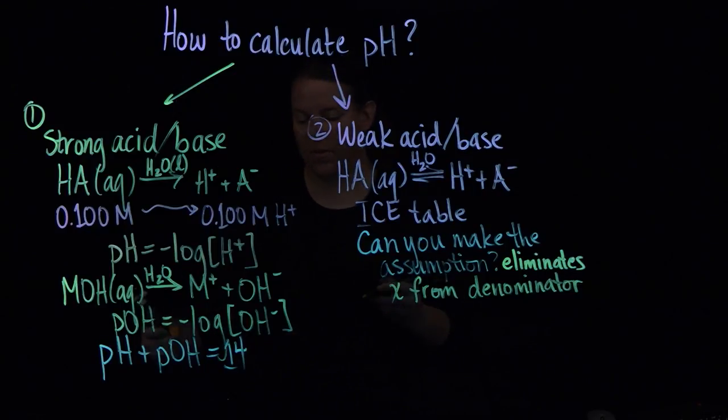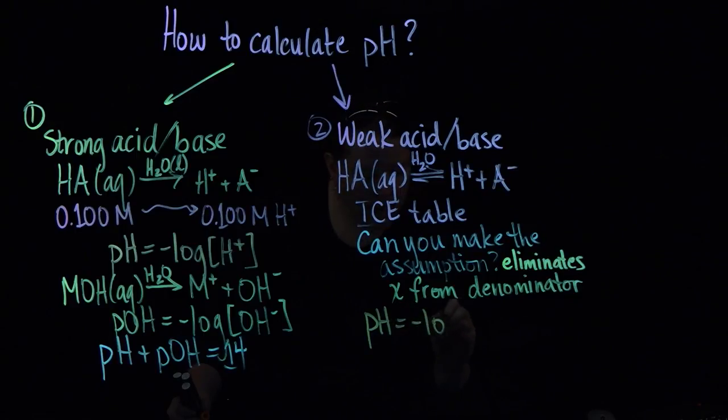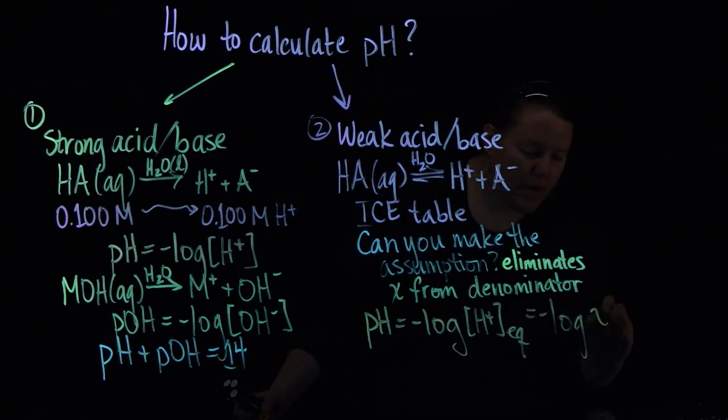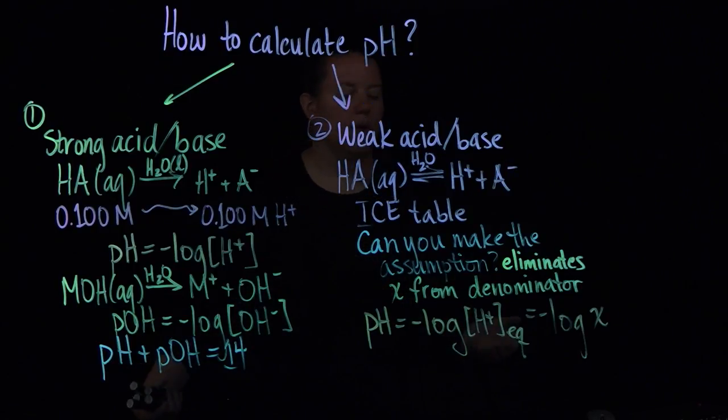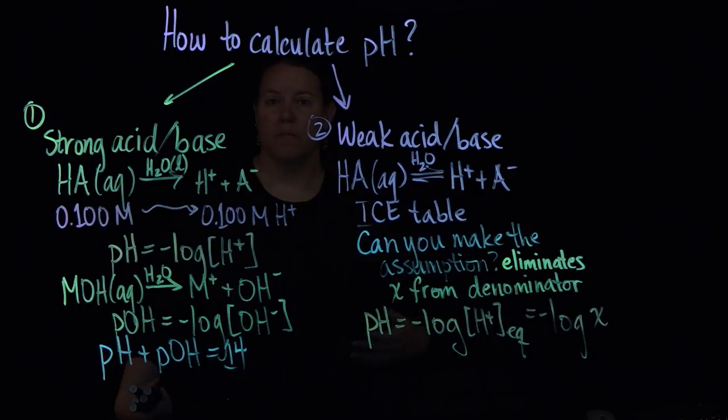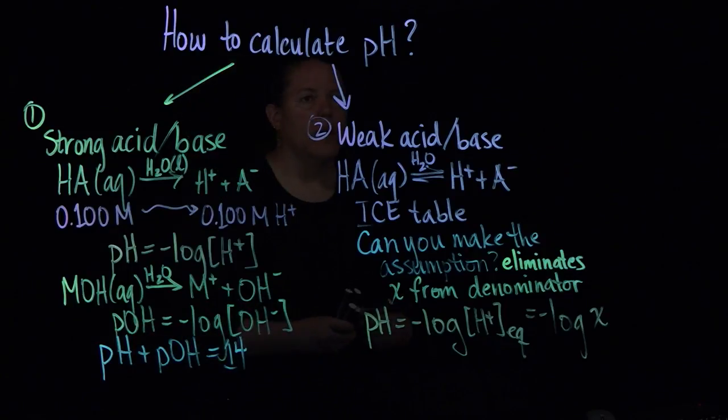The same thing here as over here, but in this case, the pH is equal to the negative log of the H plus concentration at equilibrium, which is almost always the negative log of x. In the case of a weak base table, you'd be finding the pOH if you took the negative log of x. And again, you'd have to go through pH plus pOH gives you 14. Ice tables are required for weak acids and bases because of their incomplete dissociation. And that's kind of where that is.